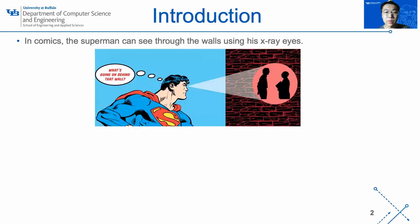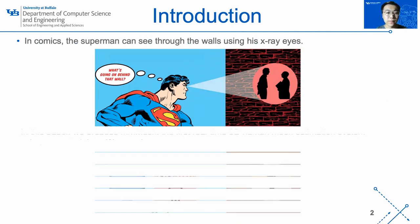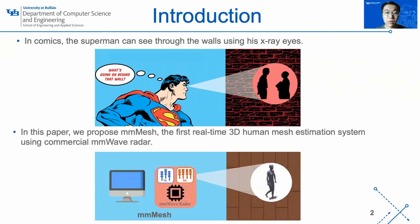As we know, in the comics, the Superman can see through the walls using his x-ray eyes, but is it achievable in the real world? In this paper, we propose our mmMesh system, the first real-time 3D human mesh estimation system using commercial mmWave radar, which can also help us to see through the obstacles.